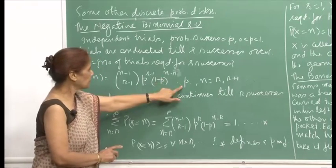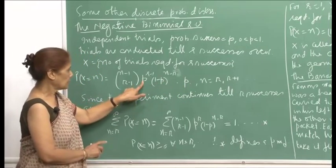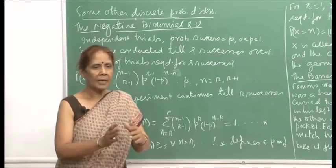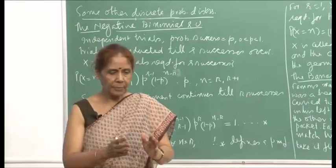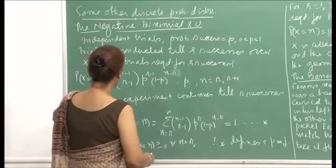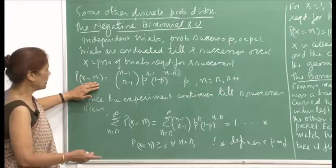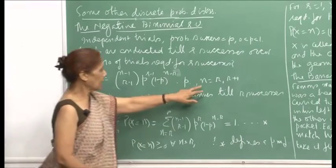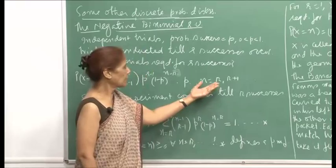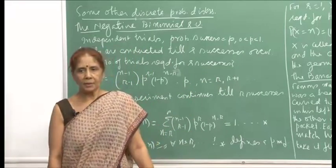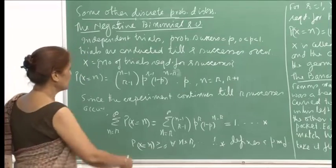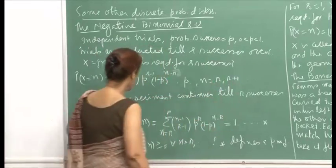The total number of successes add up to r, but you want r minus 1 successes to occur anywhere up to the n minus 1-th trial, and the n-th trial must be a success. So n can vary from r, because you want r successes — at least r trials have to be conducted. Therefore n is r, r plus 1, and so on, and this number can go on up to infinity.